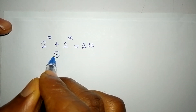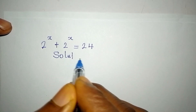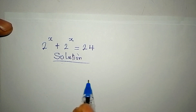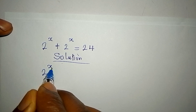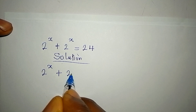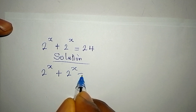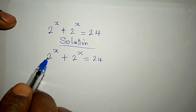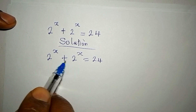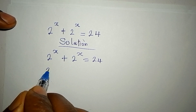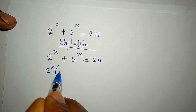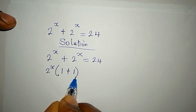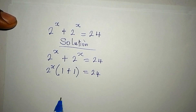Hello everyone, let's provide the solution to this problem: 2 to the power of x plus 2 to the power of x equals 24. We can add this up, or better still, factorize 2 to the power of x, and here we have 1 plus 1, so this equals 24.